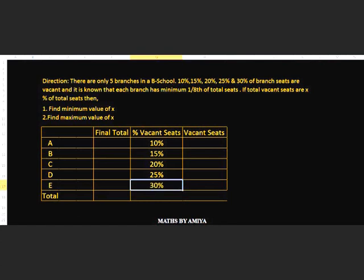Now the most important thing is the total. What is the sum of total values of A, B, C, D, E? If we have percentage and we take 8, that would be a tough calculation. So say total is nothing but 800. Plot all the percentage values. Total should be divisible by 8 and should be a multiple of 100 for easy calculation.